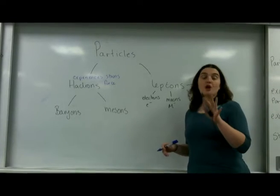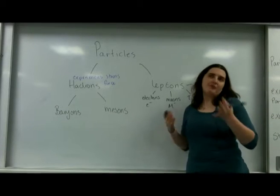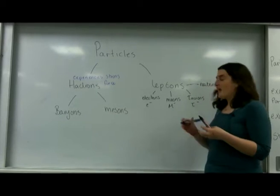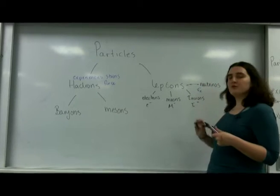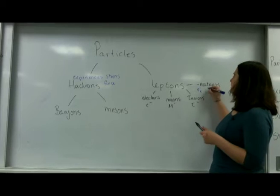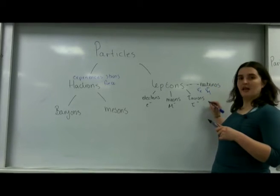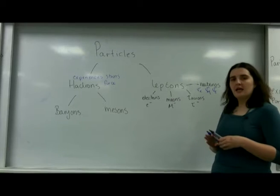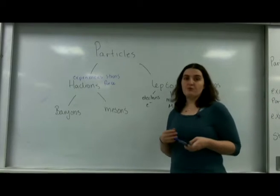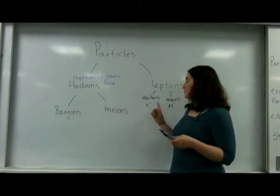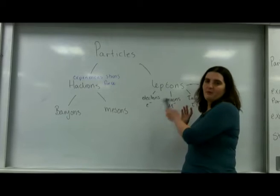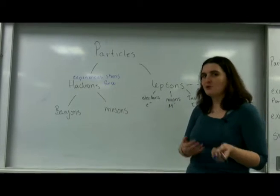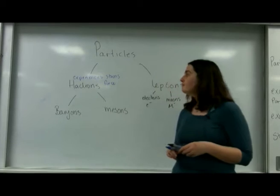Neutrinos come in three flavours depending on who they're paired with: you get electron neutrinos, muon neutrinos, and tauon neutrinos. The AQA syllabus really only focuses on electrons and muons, but tauons can come up in some textbooks or revision guides that you read.